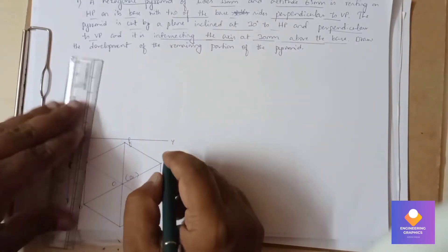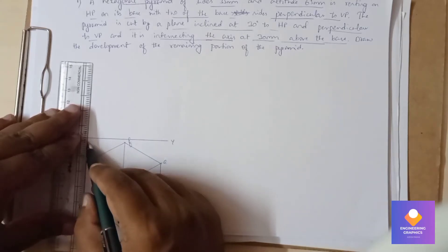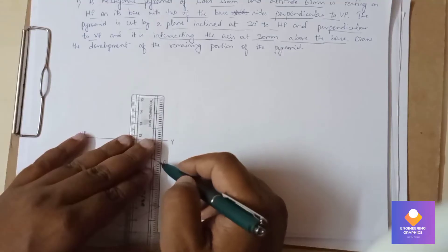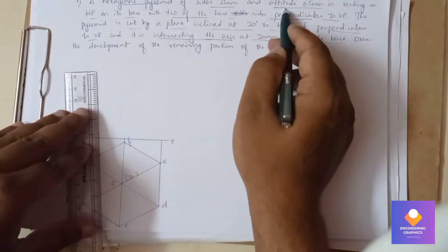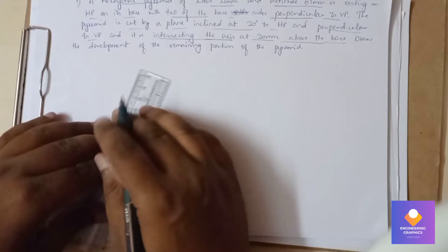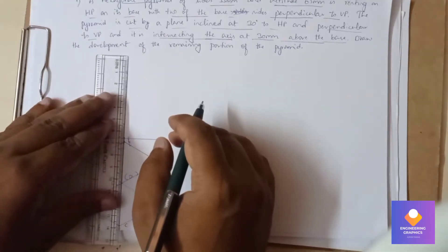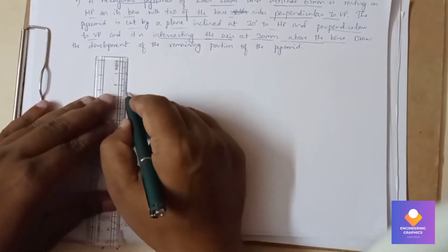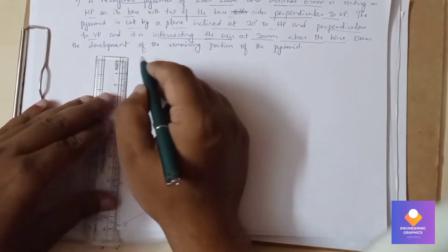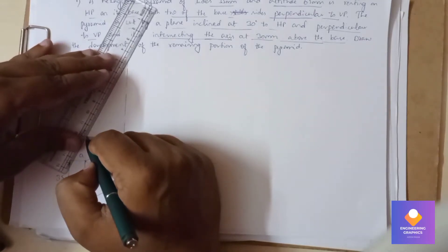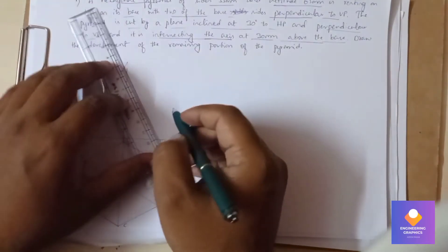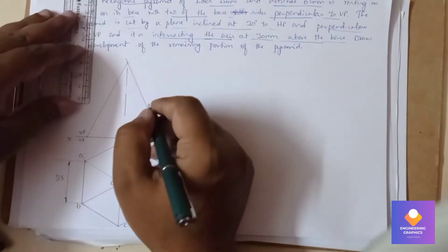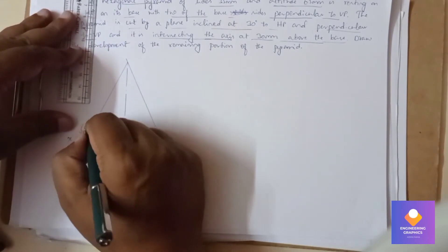Now we draw the front view. The altitude height is 65mm, so we consider the axis length as 65mm. Connect it and mention the naming. The dimension is 65mm.